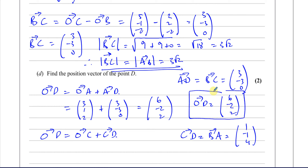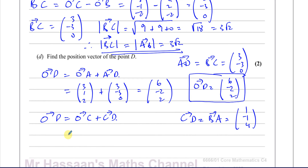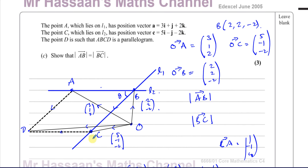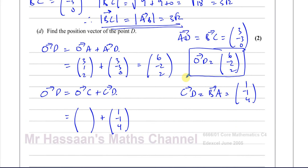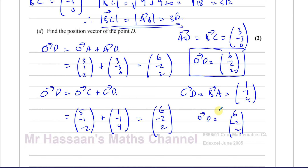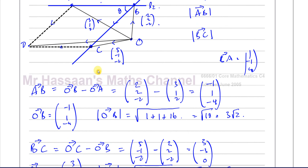To verify using the other route: OD = OC + CD = OC + BA = (5, −1, −2) + (1, −1, 4) = (6, −2, 2). Both routes give the same answer. You don't need to check both in an exam, but it confirms we've found the right position vector. As long as you travel from O to D by a known route, you get the correct answer.